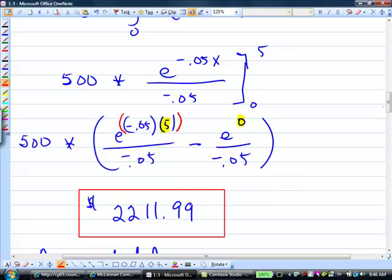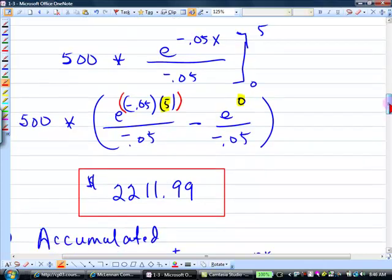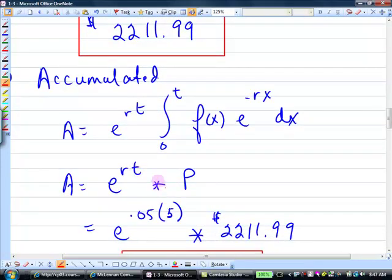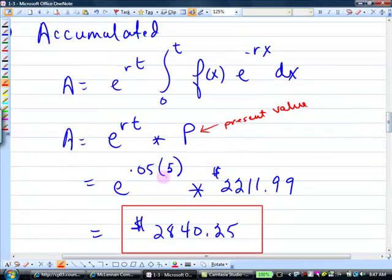So that's the answer to the first part. That's the present value of the money flow. And then the second part said, what's the accumulated? And we said once we found this, all we have to do is multiply it by e to the rt. So it's e to the rt times P. I'm calling that P, that's present value. So I have e to the 0.05 times 5, which is all in parentheses, times 2211.99, and you should get 2840.25. So make sure that you can get that using your calculator.